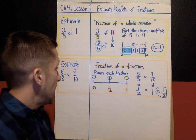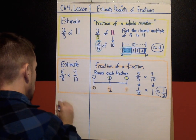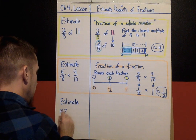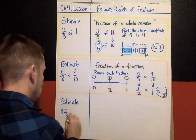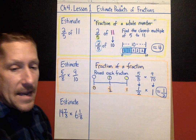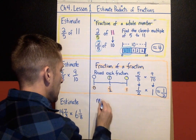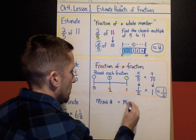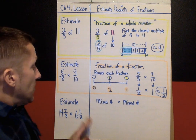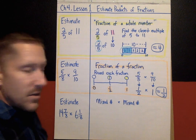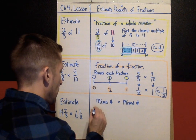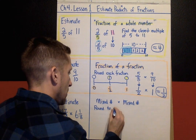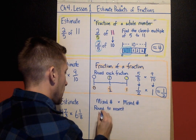The last example for today is: how would you estimate 14 and seven-eighths times six and one-eighth? This is a mixed number times a mixed number. If you have a mixed number times a mixed number on today's practice, this is your strategy: round to the nearest whole number — something we've done before.